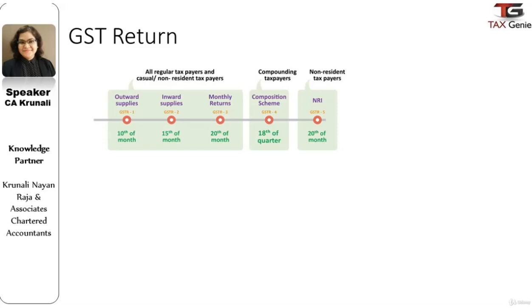Next is a quarterly return, which is GST Return 4, to be filed by dealers who have opted for a composition scheme. This return is due by the 18th of the next quarter.